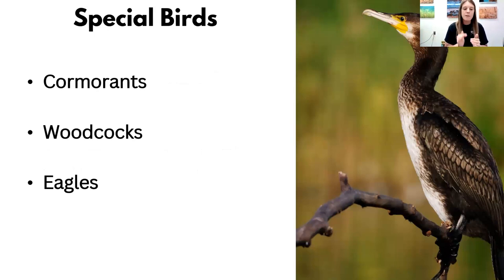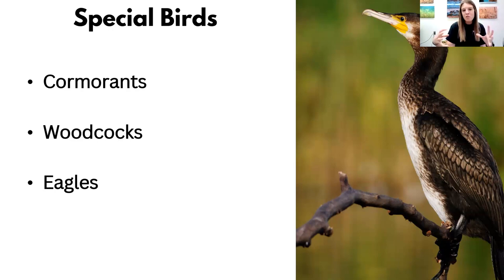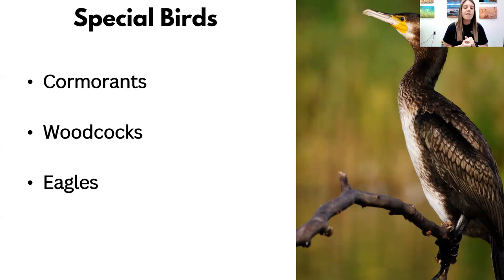A couple of special birds — all of these we have in Nebraska. Cormorants are unique diving birds that spend a lot of time underwater getting fish. They can actually change the shape of their lenses to become more spherical underwater, helping the iris open up to get more light when chasing fish. Woodcocks — people call them timberdoodles — have eyes set so far back in their head they almost look like an alien. They can see in 360 degrees, giving them a very large monocular view. They can see predators from all different angles, especially agile hunters like weasels.